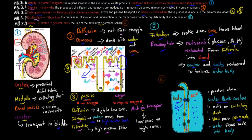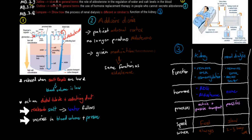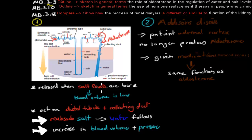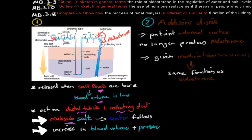Dot point 3.9 says 'outline' — sketch in general terms — the role of aldosterone in the regulation of water and salt levels in the blood. Aldosterone is released when salt levels are low. When salt levels are low, blood volume is also low because water is connected to blood volume. ADH acts on the distal tubule and collecting duct to reabsorb more salt. When more salt is reabsorbed, water follows — because water always follows salt — which increases blood volume and blood pressure. That is the function of aldosterone.